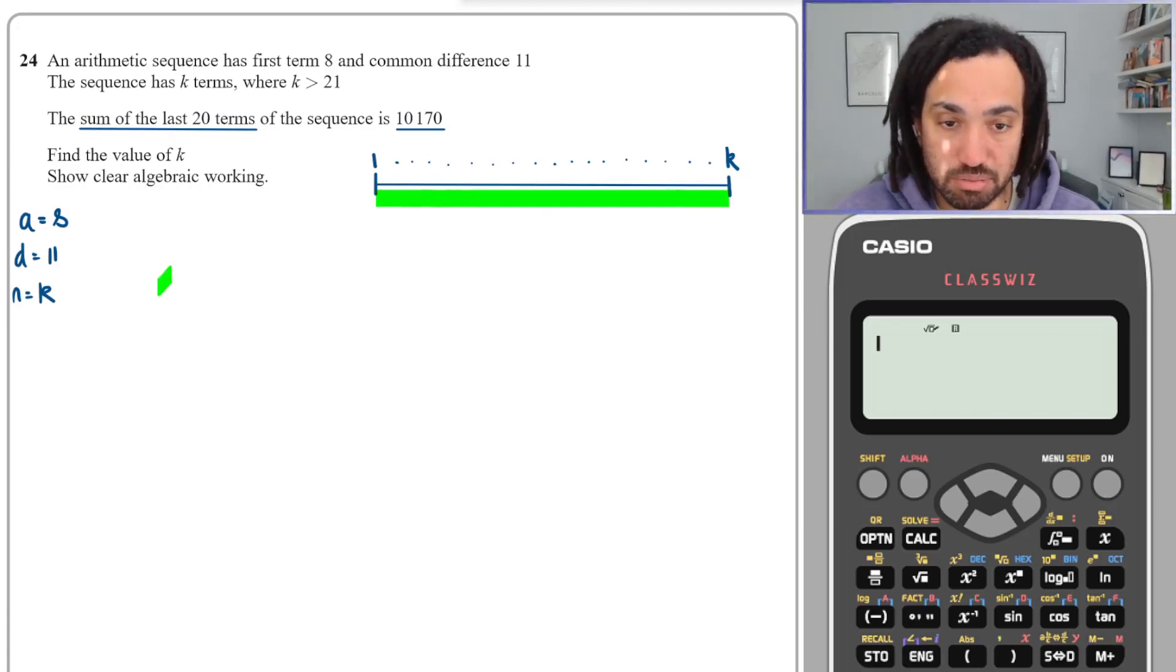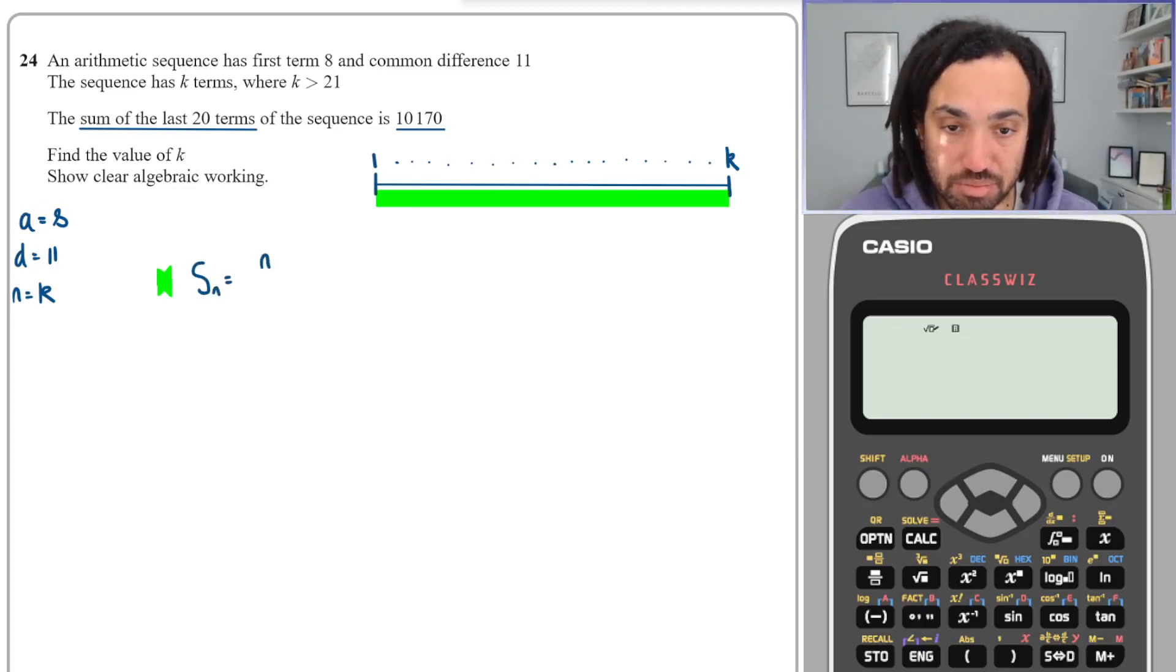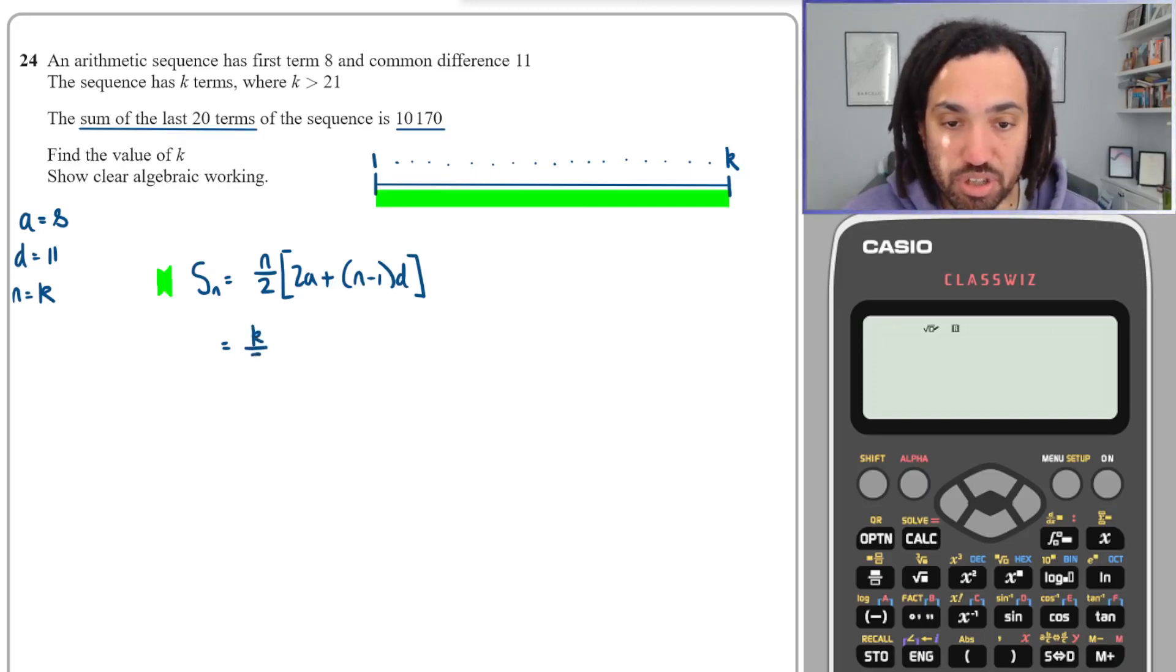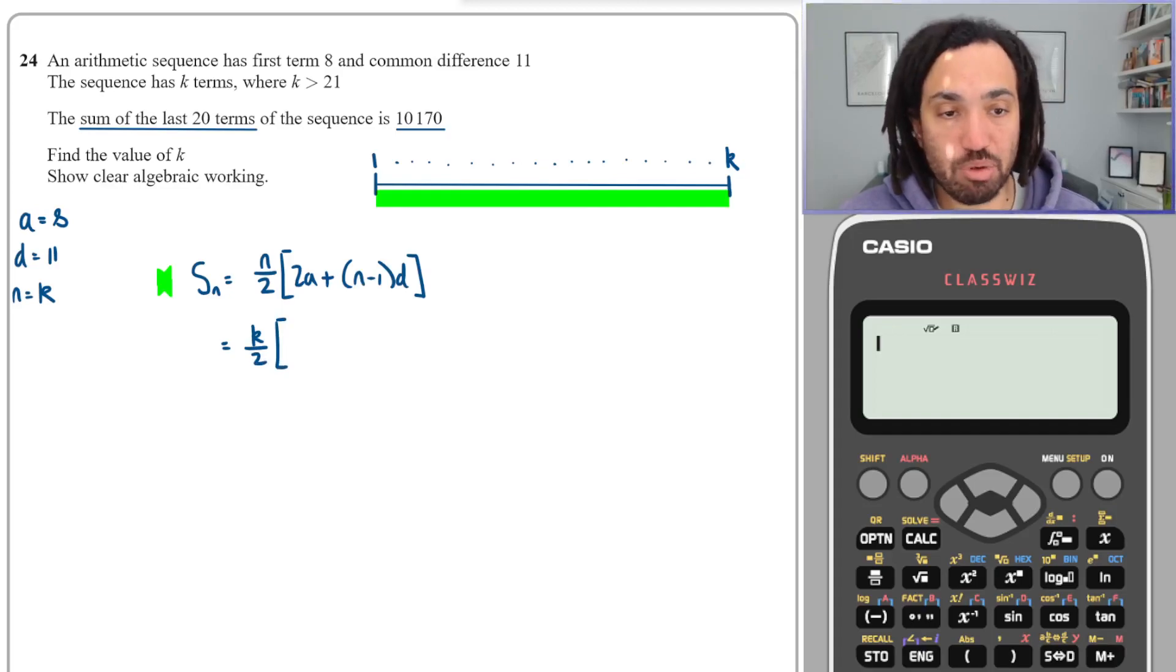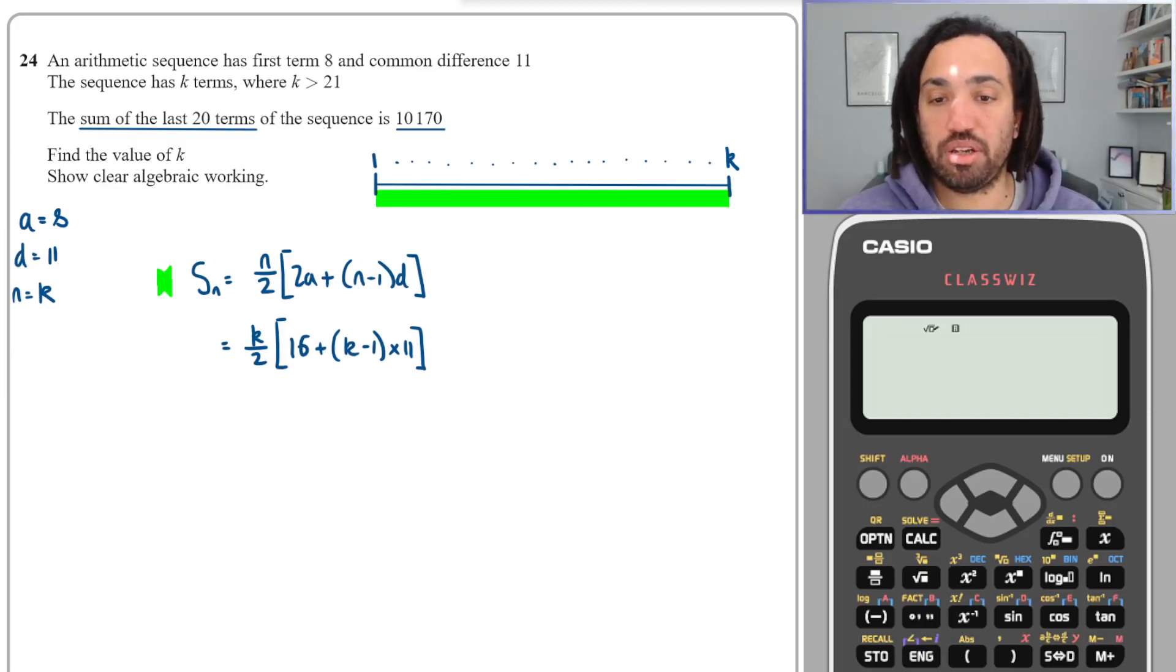In fact, we could do that now. So the green collection of terms summed together will be using the summation formula, which I'll write down here in case you're unfamiliar with it, but this is given in your formula book. It looks like this: all k of those terms would be k over 2, times 2 lots of a. Well, we know a is 8, so that makes 16, plus k minus 1 multiplied by d, which is 11.